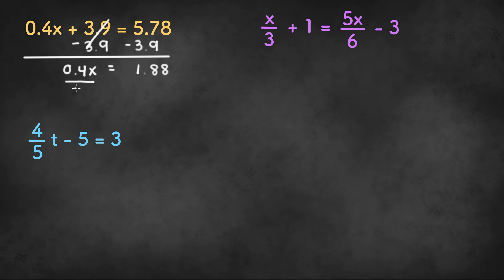Now we can divide both sides by 0.4. We're left with x on the left side, and 1.88 divided by 0.4 is 4.7 on the right side. And that will be our final answer.